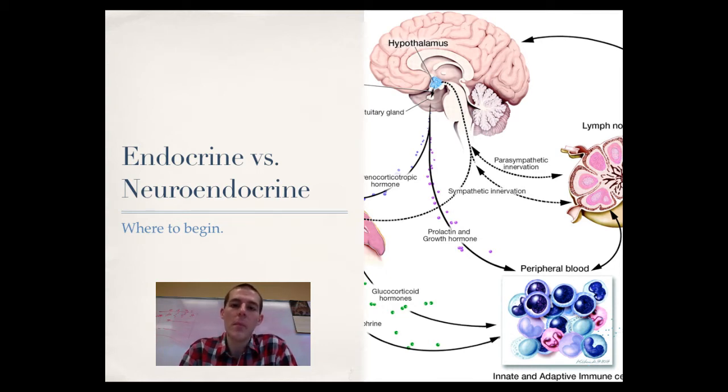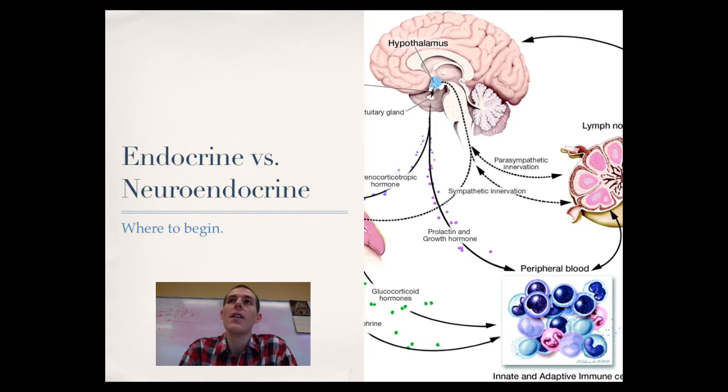Neuroendocrine signaling begins with a neurosignal, or a signal coming out of the nervous system. There are cells called neuroendocrine cells.